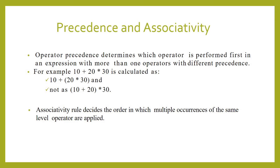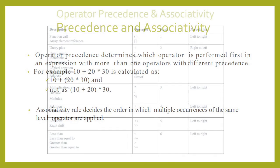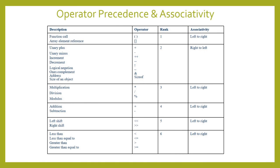Next is associativity. The associativity rule decides the order in which multiple occurrences of the same level operator are applied. In the previous example, we saw a plus and a multiplication symbol. But if two operators of the same precedence occur in an expression, which one is considered first is decided by the associativity rule. The operator precedence and associativity are shown in this table.